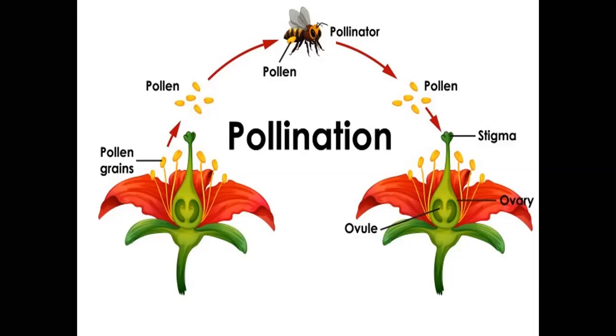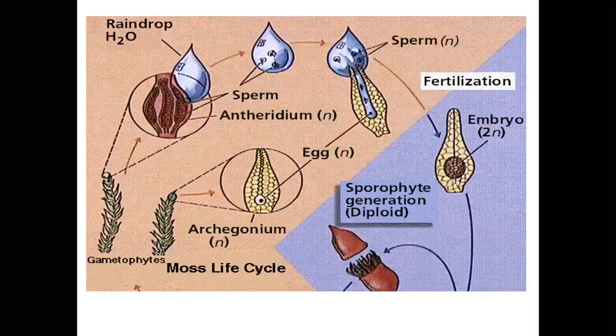This diagram shows bryophyte reproduction. The male gametes leave the body, swim through water, reach the female gamete, and fertilize it. This completes the life cycle and reproduction process of bryophytes.